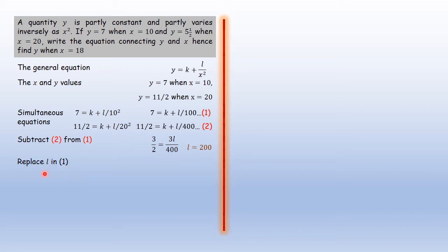Moving on to replace the value of l in equation 1. l is 200, so replacing it in equation 1, we have 7 = k + 200/100. And therefore, k = 5.